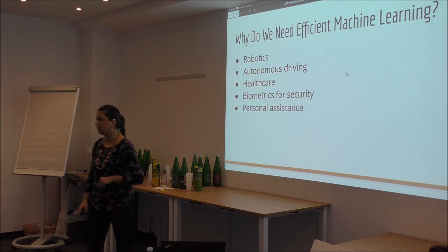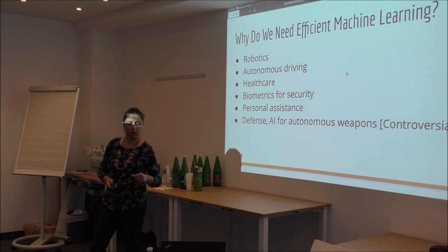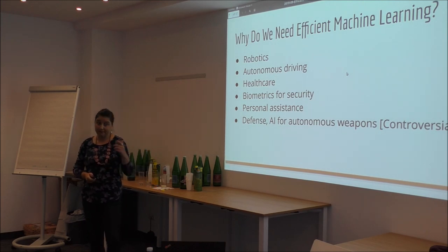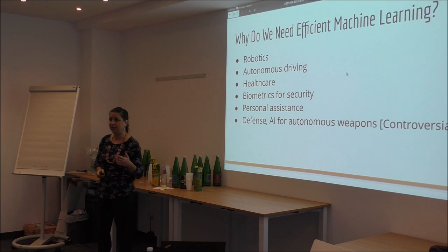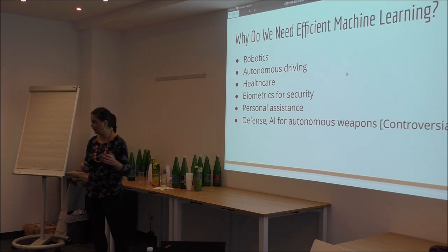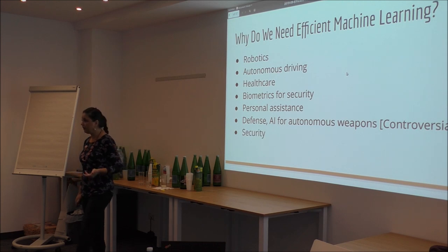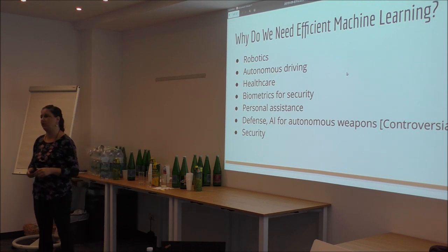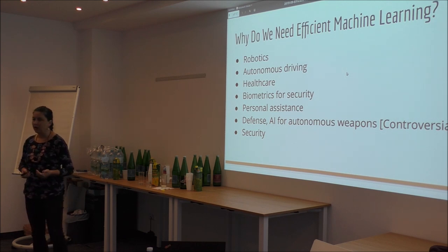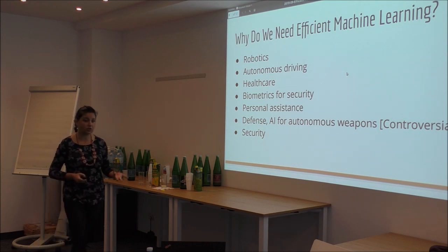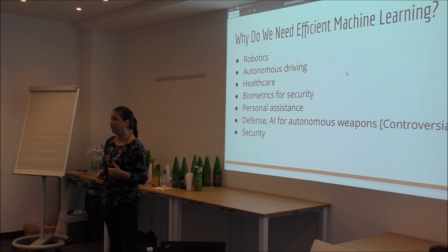We need it for personal assistance, which we already use quite a lot. We also need it for defense — a somewhat controversial topic about AI for autonomous weapons; some people agree, some disagree, I'm not entering that debate. Finally, we need it for security: the more mobile devices we have, the more connected they are, the more sensitive and confidential data they store, and we want them to be protected.